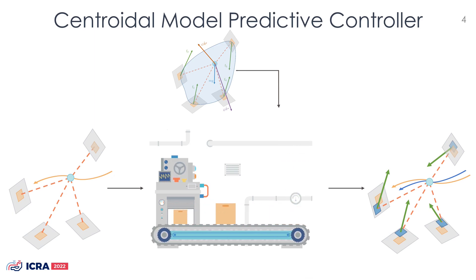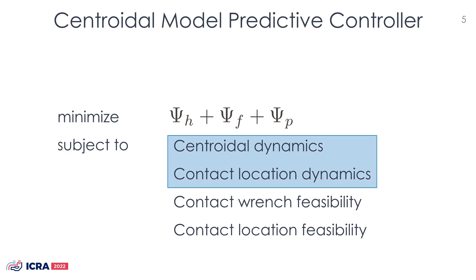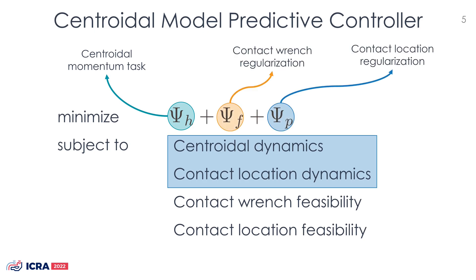The MPC formulation is obtained by solving an optimization problem composed of three main elements: the prediction model, an objective function, and a set of inequality constraints. The contact location dynamics and the centroidal dynamics are considered as a prediction model. The objective function minimizes the error between the centroidal dynamics and the desired nominal trajectory, and also contains contact force and contact location regularization terms. Finally, we ask for feasible contact branches and location.